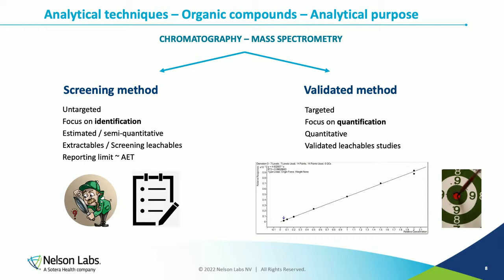Whatever technique is used, it can be applied in two ways: as a screening method or as a validated method. When used as a screening method, the purpose is an untargeted analysis — you want to discover all your extractables and leachables, focusing on identification. You can also quantify to some extent, but it is not fully quantitative — rather estimated or semi-quantitative. This approach is typically used for a screening study.